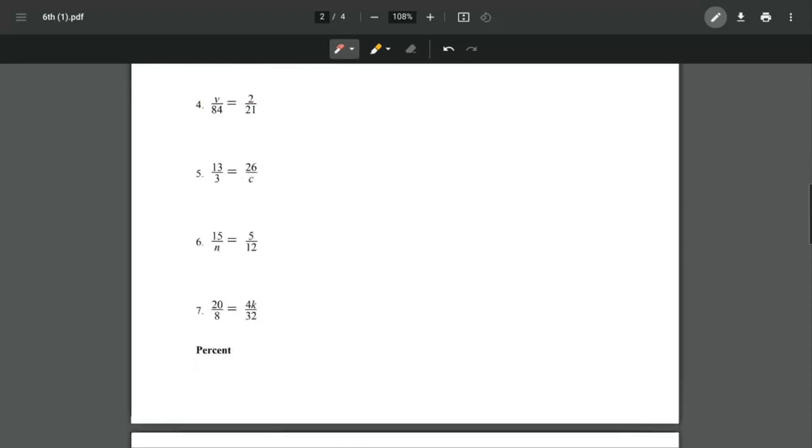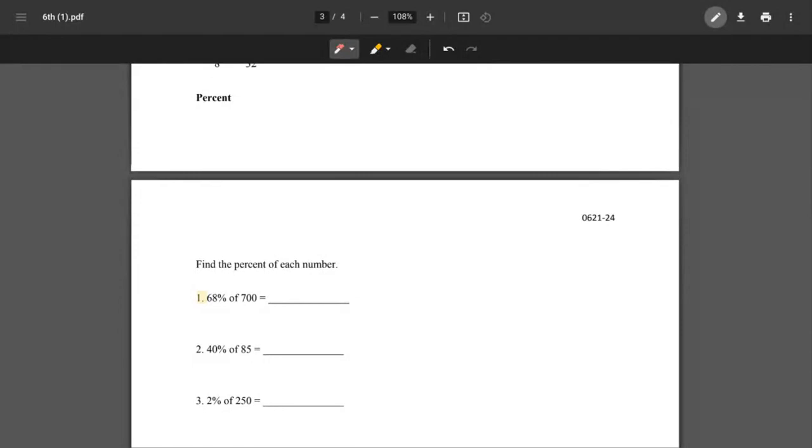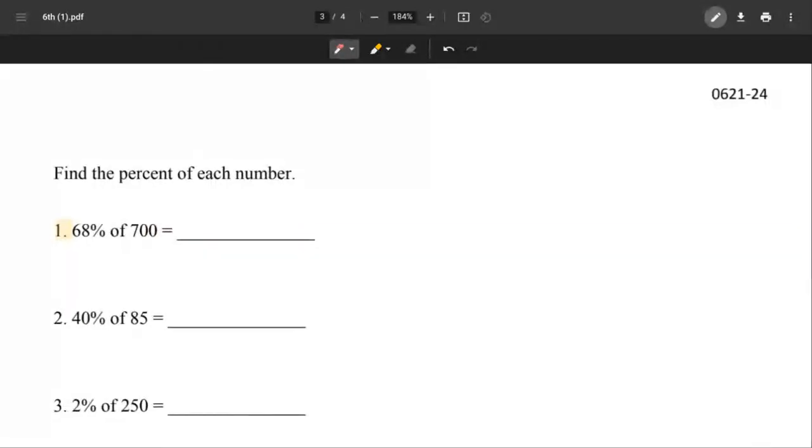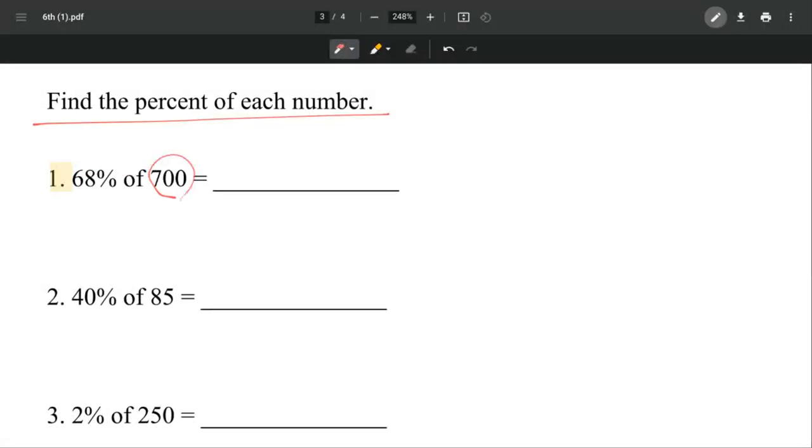Let's move on to percent. We're looking at number one - find the percent of each number, which is 700 for the first question. We're trying to find 68% of 700. So something is 68% of 700, and we solve that by... 68% could be written as 68 over 100.